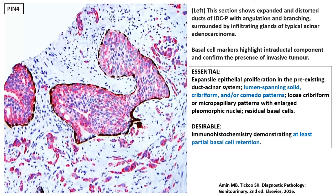However, as already noted, intraductal carcinoma will in most cases be associated with co-existent acinar or ductal carcinoma. In this case, within the dilated duct of IDCP, along with the adjacent stroma, you see small trabeculae and ill-formed glandular aggregates of acinar carcinoma overexpressing AMACR but not expressing basal cell markers. The essential diagnostic features per WHO are: expansion of the epithelial proliferation, lumens spanning solid cribiform and/or comedo patterns, with desirable IHC markers establishing presence of basal cells.